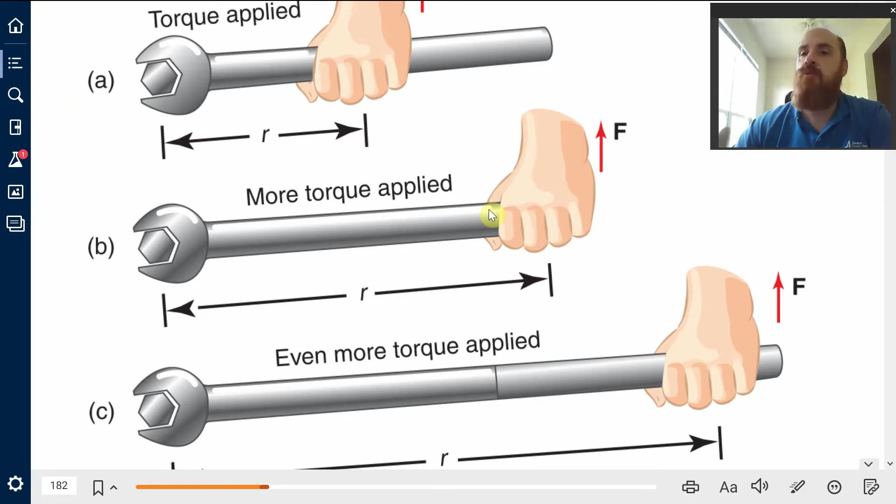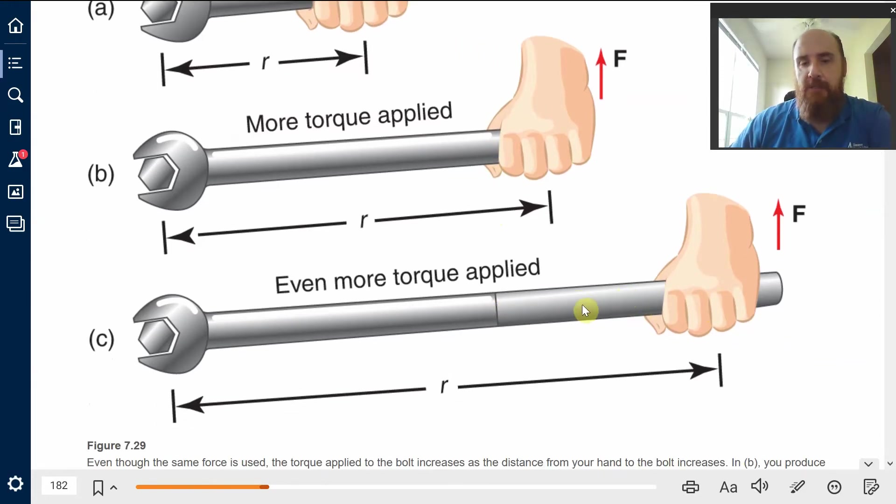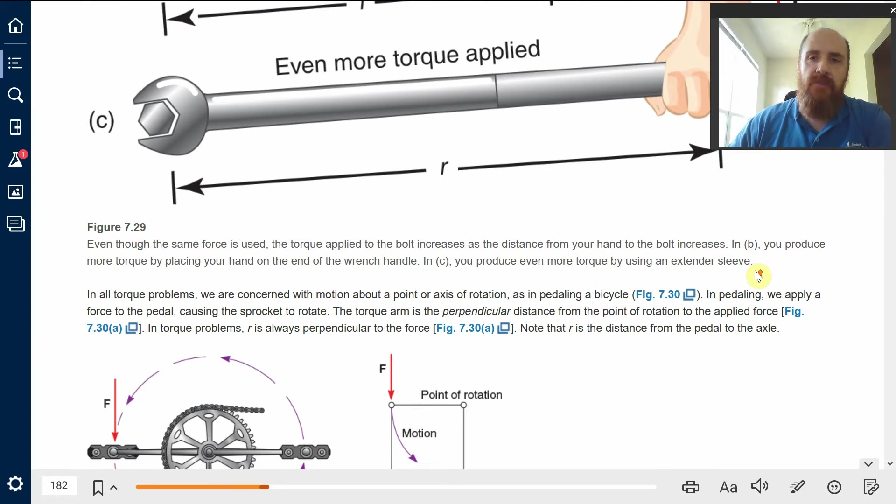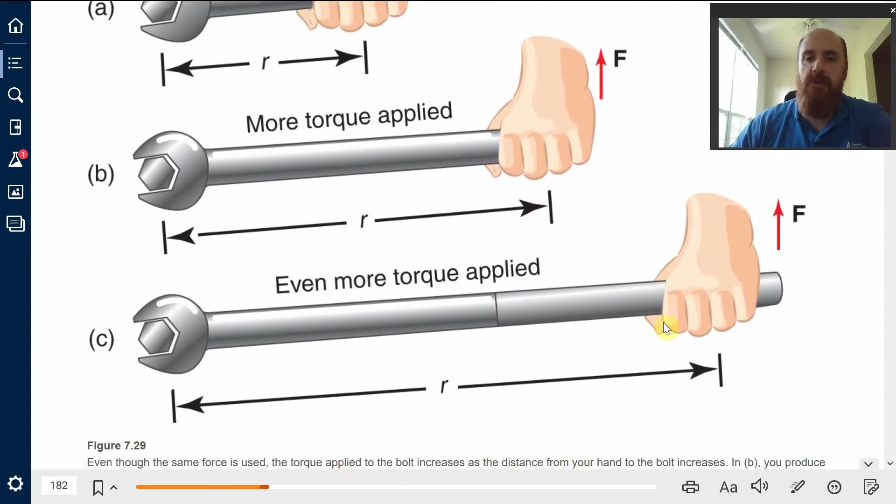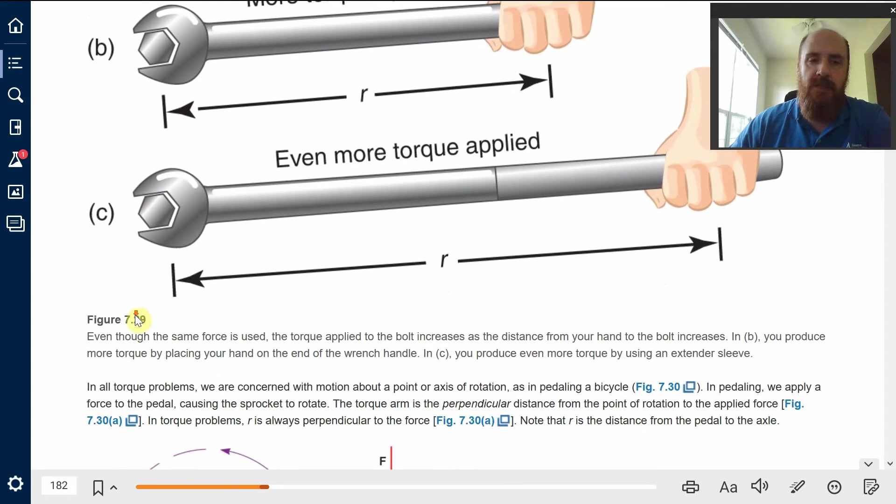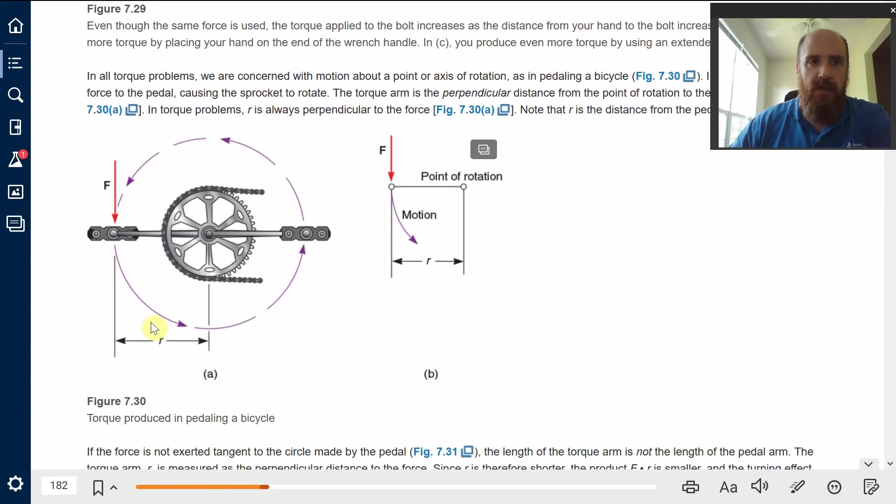You're still applying more turning force because turning force is the product of two things, the force and the torque arm. You put an extender or just a pipe on the end of this long-handled wrench, you can get even more torque out of your force. So that's what torque is. It's the product of force multiplied by the distance of that force to the center of rotation.